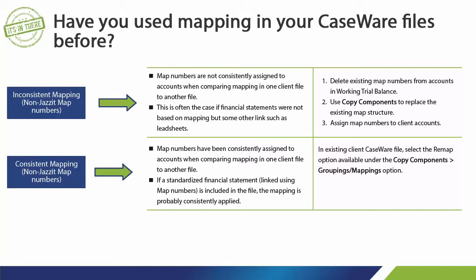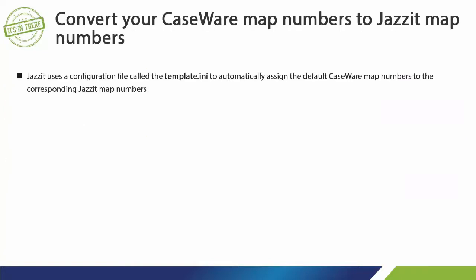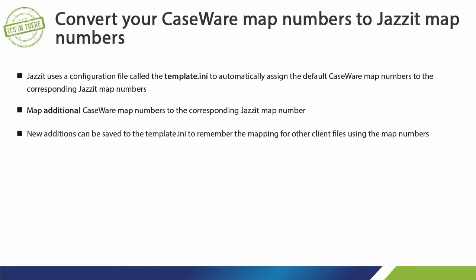JASET uses a configuration file called the template-ini to automatically assign the default Caseware map numbers to the corresponding JASET map numbers. You can map additional Caseware map numbers to the corresponding JASET map number, and new additions can be saved to the template-ini file for use when mapping other client files using these map numbers.